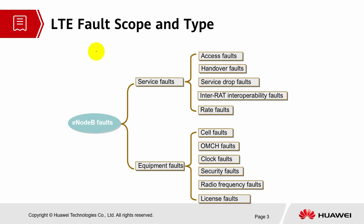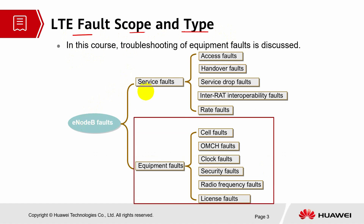Let's look into the LTE fault scope and type. The eNodeB fault is divided into service fault and equipment fault. Service fault is divided into access type of fault, handover, service drop fault, inter-RAT interoperability fault, and rate fault. On the other hand, for the equipment fault, it is related to cell fault, OM channel for operation and maintenance, clock faults, security faults, radio frequency faults, and license fault. In this course, we will be mainly focusing on the equipment fault.